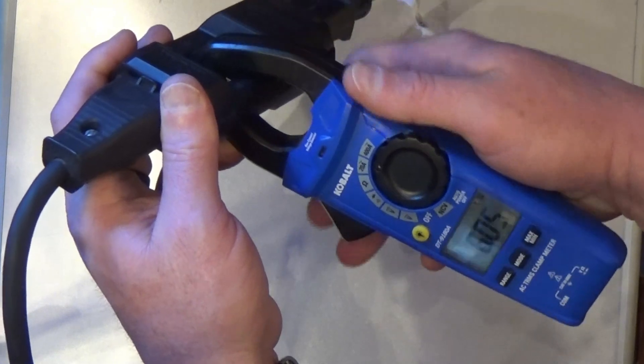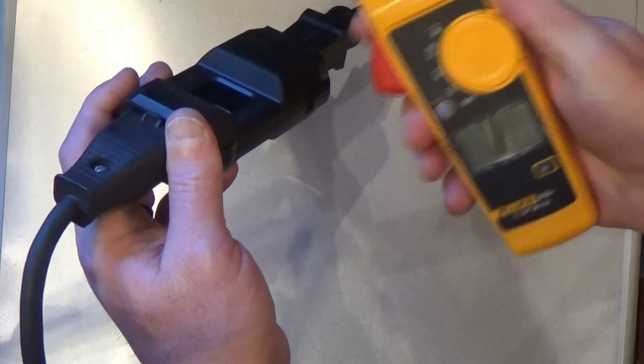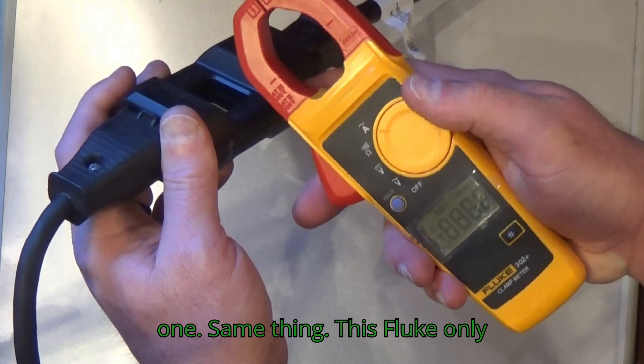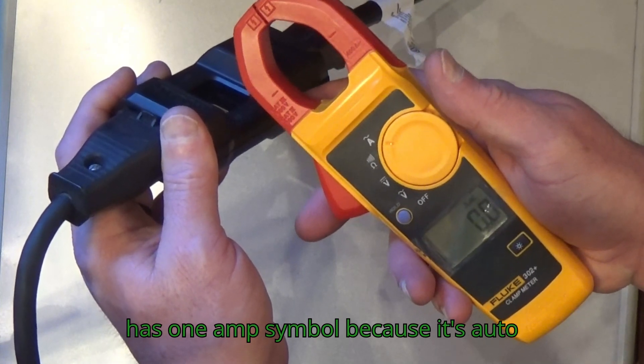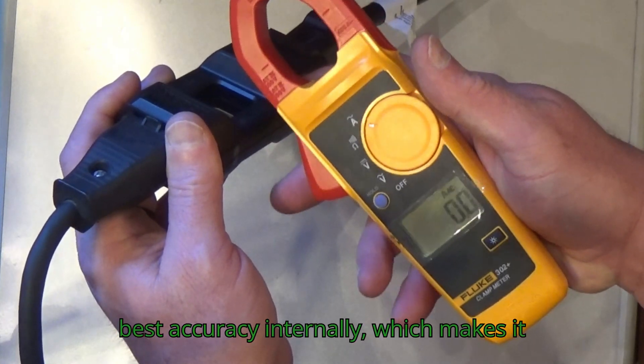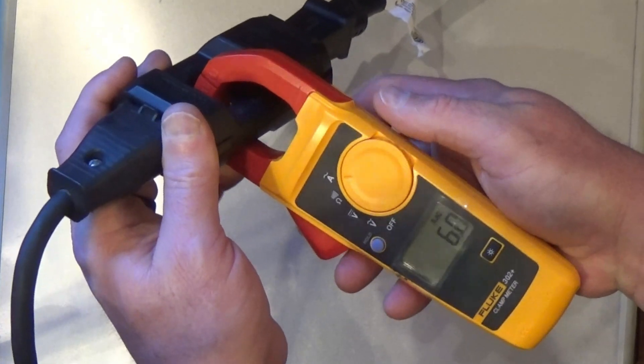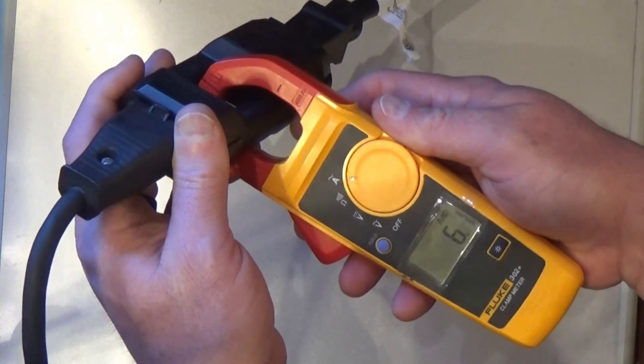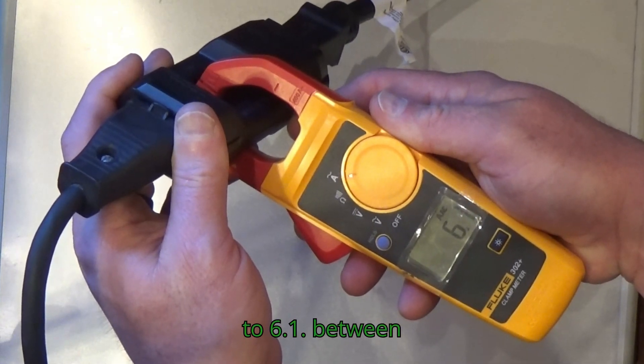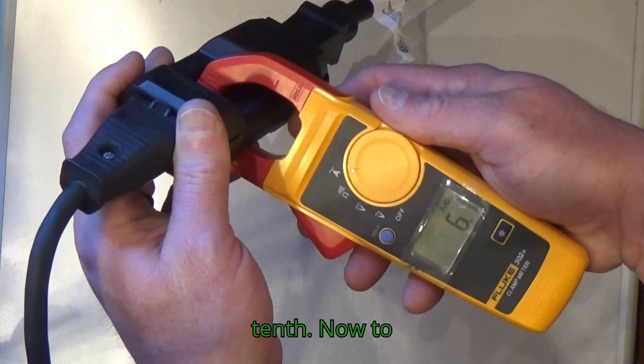Now let's check the other one. Same thing. This Fluke only has one amp symbol because it's auto-ranging. It will range to the best accuracy internally, which makes it really nice. And you can see it's only showing a tenth. There's 6.1. So between the two, there's a difference of about a tenth.